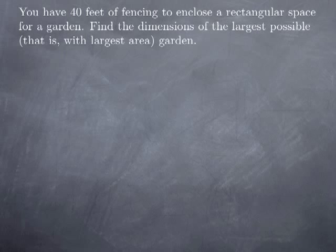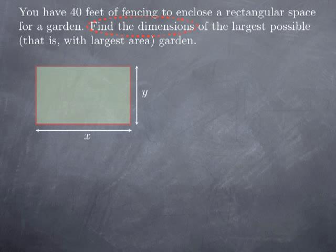We want to find the dimensions of the largest possible garden, where largest possible here means of maximal area. So we're looking for the dimensions of a rectangle. Because we want to find the dimensions, we need to give names to them. So I'm going to call the dimensions x and y.